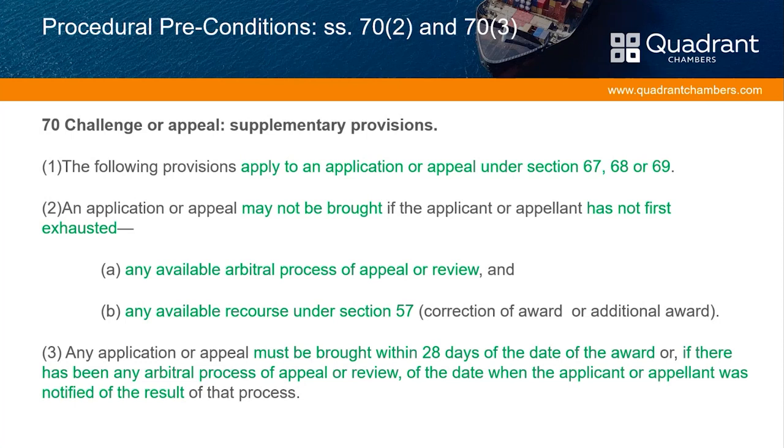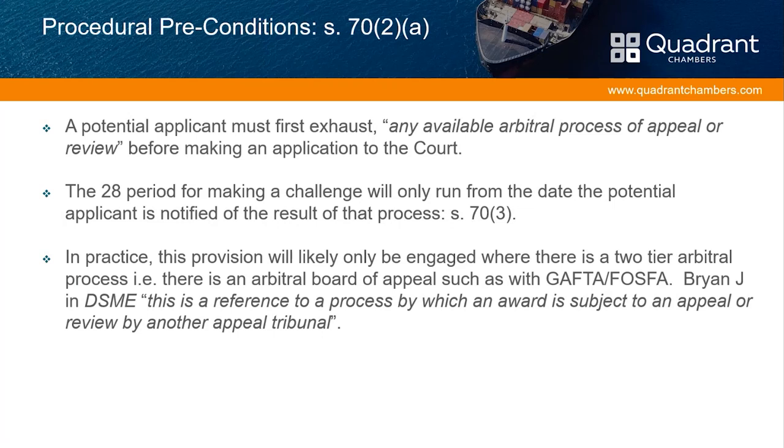Section 70 contains the procedural preconditions, applying to an application or appeal under any of sections 67, 68, or 69. Subsection 2 provides that an application or appeal may not be brought if the applicant has not first exhausted any available arbitral process of appeal or review, and any available recourse under section 57, which contains provision for the correction of an award or an additional award. Subsection 3 provides the 28-day time limit: an application or appeal must be brought within 28 days of the date of the award, or if there has been any arbitral process of appeal or review, of the date when the applicant was notified of the result of that process.